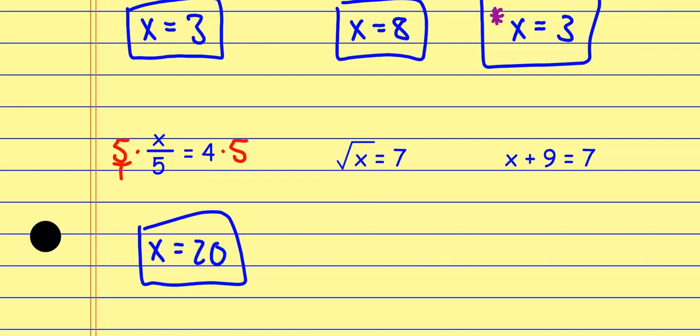This one — you are not going to be required to do these just yet. Eventually we'll get to these, but I want you to see it now as a preview. The square root: to undo that, I square each side. This gives us X and this gives us 49.